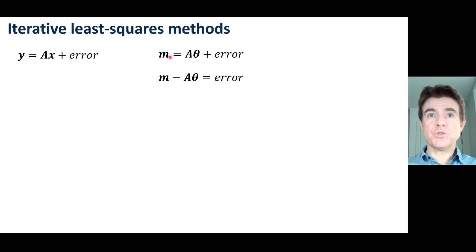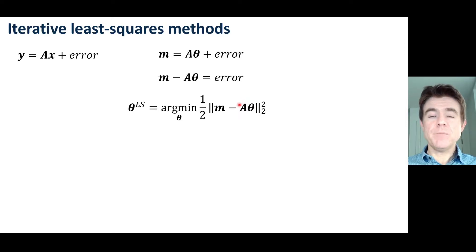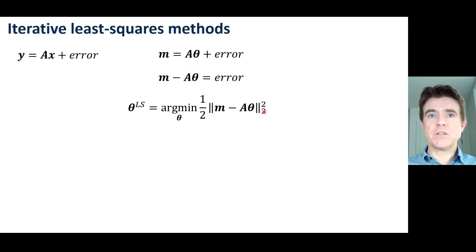We can rearrange this and say there will be a discrepancy between the measured data vector M and the model — in other words, the parameter vector theta running through a system model A. For that reason we devise the least squares problem, where we're trying to find a least squares estimate of the vector of parameters theta such that when you use that parameter vector theta — for example an image — run through a system model A (such as a forward projection for a medical imaging system), it agrees with the noisy measured data vector M. We minimise the square difference using the L2 norm, and the theta that minimises that difference is called the least squares estimate.